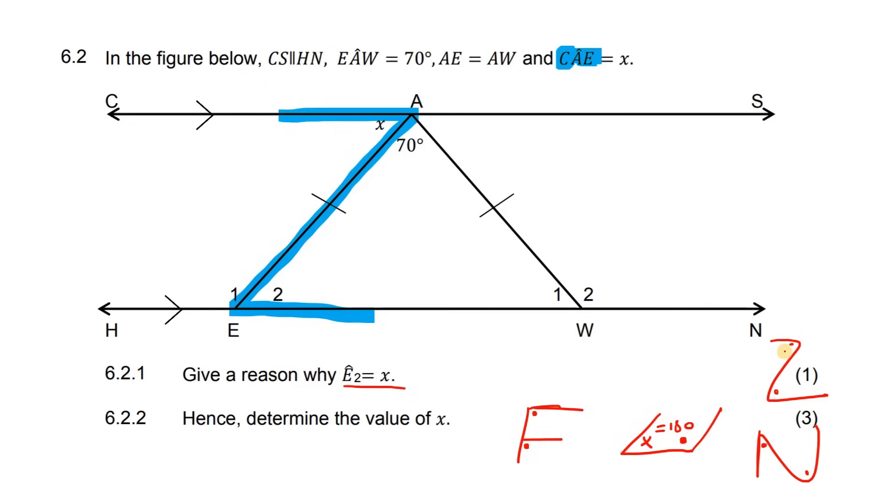And what we know is that with the Z, the corner angles are the same. So this angle must be the same as this angle. That is why E2 is the same as x. The reason is alternating angles, or alt angles.